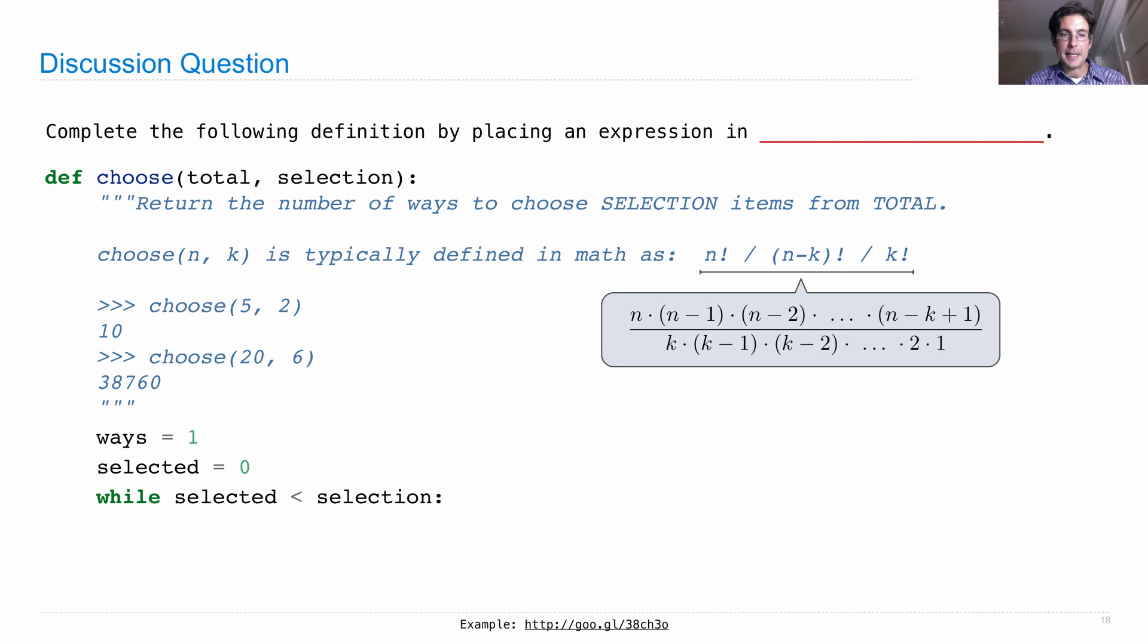We'll keep selecting items until we've reached our selection. What do we do? We select one more item than we had before, and then we update ways and we update the total that we can select from. Total we can select from will be total minus one, and the ways will be the number of ways we had to select we've come up with so far times some term. Your goal is to figure out how to write that term such that choose(total, selection) will in fact compute this formula that we're interested in and then return it as ways.